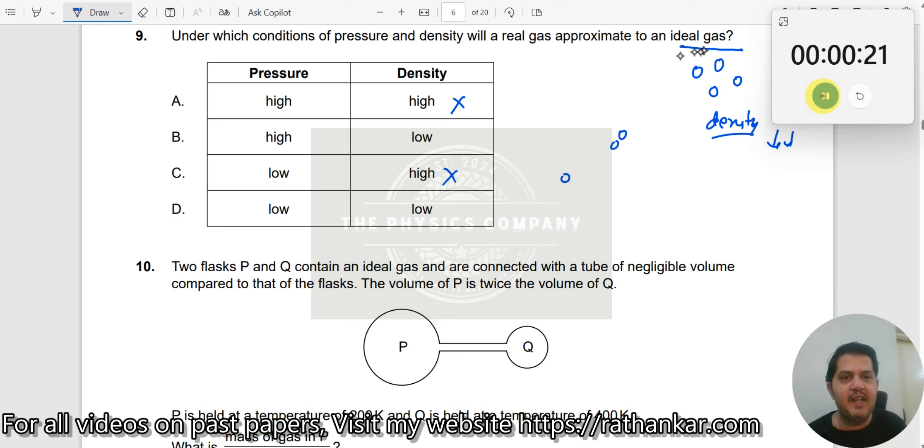I do not want intermolecular forces in an ideal gas. So what should happen? There should be lesser pressure. Therefore, it should also have lower pressure. So the right answer is low pressure and low density.